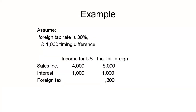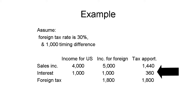Let's do a quick example. Assume we have income subject to a 30% foreign statutory tax rate, like we did last time. Also assume the foreign rules on inventory are different than U.S. rules, causing a $1,000 timing difference. We have $4,000 of sales net income and $1,000 of interest income for a total of $5,000 under U.S. rules. But under foreign rules, there's $5,000 of sales net income and $1,000 of interest income for a total of $6,000. This results in total foreign tax of $1,800 on the $6,000 of income under foreign law. We must apportion this tax on U.S. income. Thus, $1,000 over $5,000 of the tax, or $360 of tax, gets apportioned to interest income.